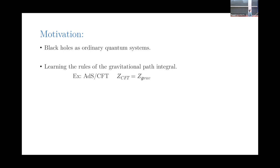Part of the reason why this is hard is that we don't really know the rules of the gravitational path integral. In this talk I'll be focused on black holes that live in asymptotically AdS spacetimes. By the AdS/CFT correspondence, we know that the partition function of the conformal field theory on some manifold with some background fields turned on should be equivalent to the partition function or path integral of the gravitational system with the same boundary values of those fields. So if we believe AdS/CFT, we know this should be true, and the bulk side contains black holes.